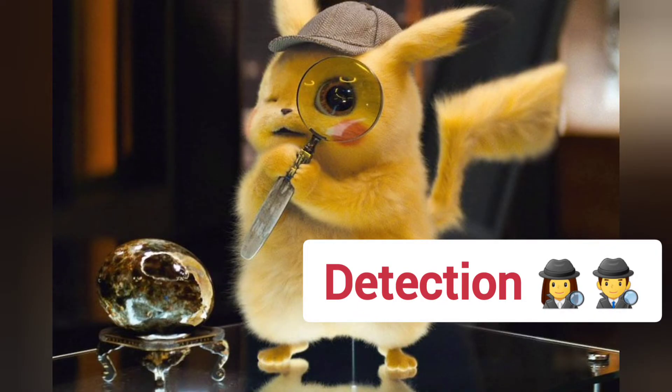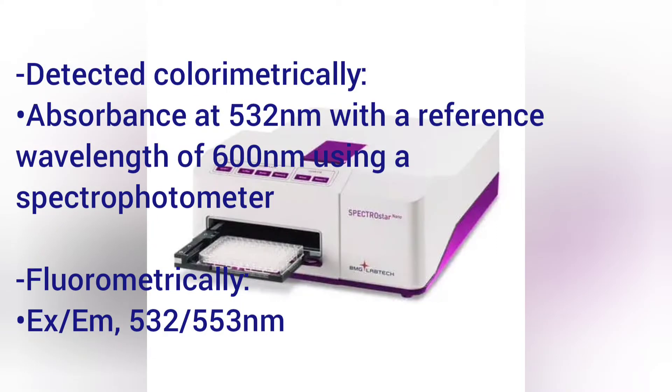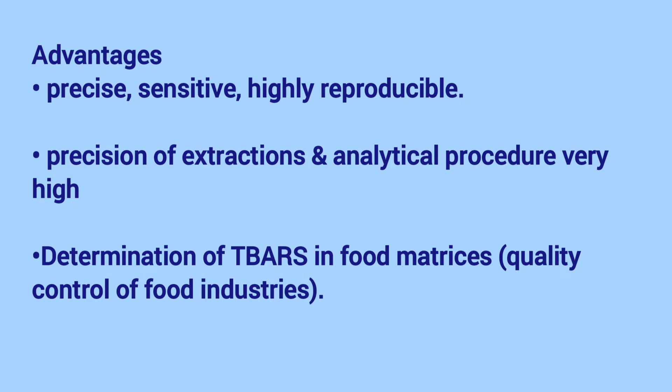Detection. Detection can be colorimetrically or fluorometrically using specific wavelengths. The method is precise, sensitive, and highly reproducible. Precision of extraction and analytical procedure is very high. Designation of TBARS in food matrices for quality control of food industries.